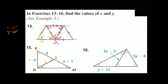Now what about this other triangle? It's telling us these two angles are congruent, and if two angles are congruent that means the opposite sides are congruent — so this side and this side are congruent. The length of one side is 4, so this side with the expression x plus 1 must also equal 4. So x plus 1 equals 4; subtract 1 from both sides and x equals 3. So x is equal to 3 and y is equal to 4.